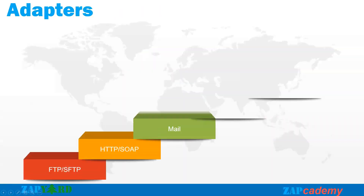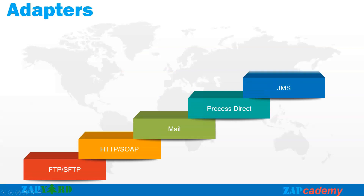In week 5, we will focus on adapters. We will talk about FTP, SFTP, SOAP, Mail, ProcessDirect, and JMS. You might have heard about these and even worked on them, but our trainer will explain the subtle differences and when to use what.